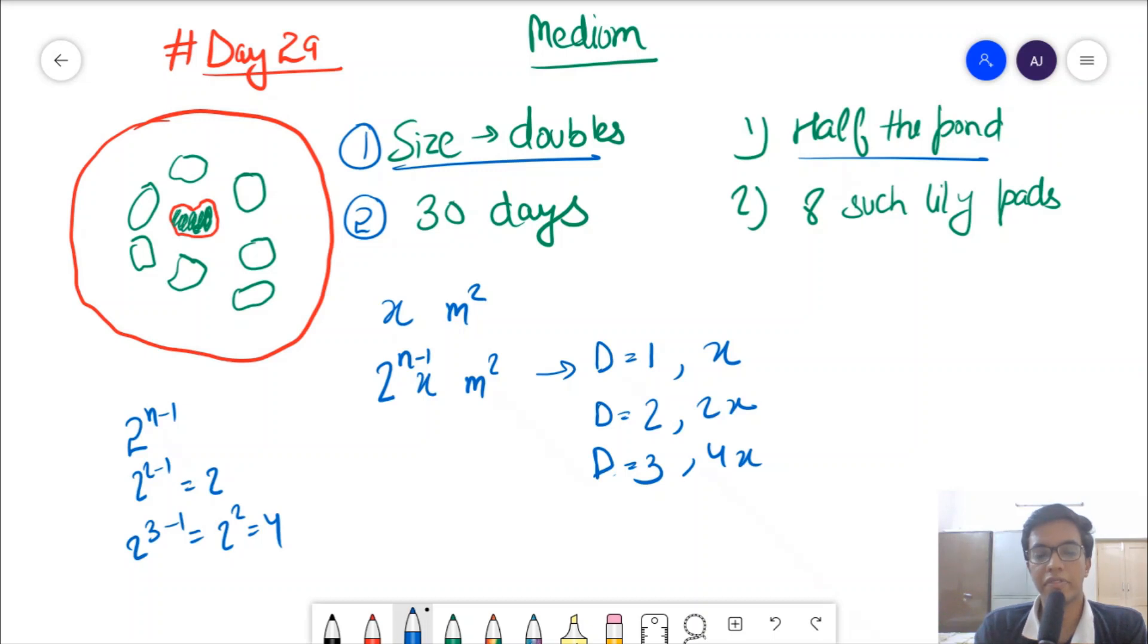So if area of 1 lily pad is 2 power n minus 1 into x, covered by 8 is 8 times 2 power n minus 1 into x. We have to find n, and that equals 2 power 30 minus 1, meaning in 30 days how much area will be covered total. Into x, so x and x will cancel out. We have to find n.